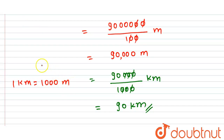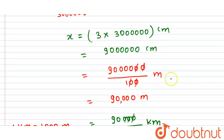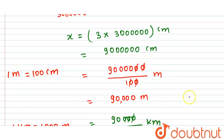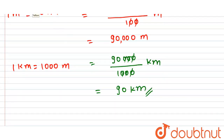We know that 1 kilometer equals 1000 meters, so to convert meters into kilometers we divide by 1000. Similarly, 1 meter equals 100 centimeters, so to convert centimeters into meters we divide by 100.